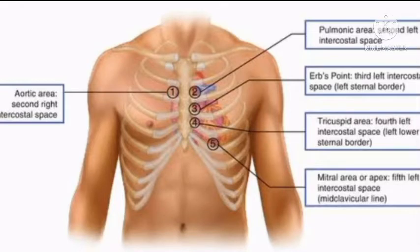As we all know, we can't auscultate the heart at any point of the chest and thorax. There are specific locations where we can auscultate and identify murmurs or any defect in the sounds. There are five points where we can auscultate.